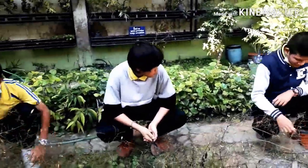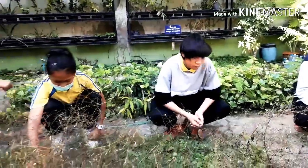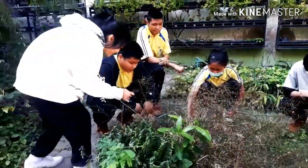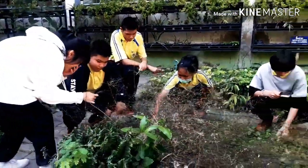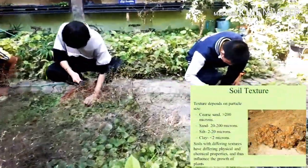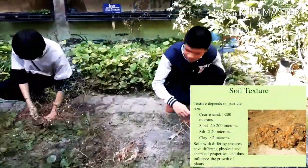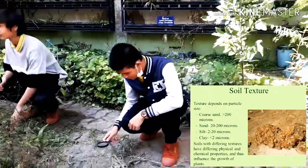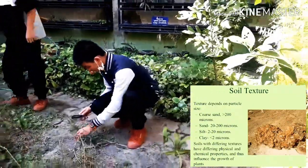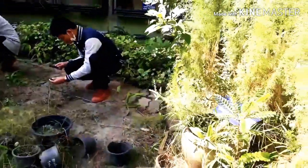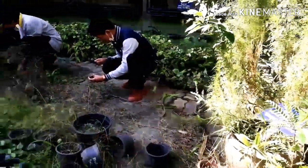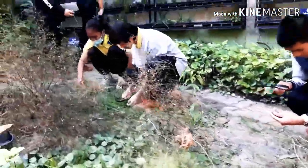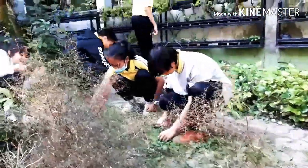We have to keep in mind that there are different types of soil. These are clay, loam, sand, and silt. Under the properties of soil, we need to know about the soil texture, soil structure, and soil color.